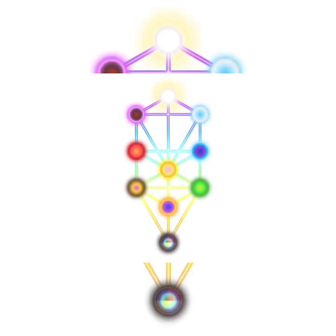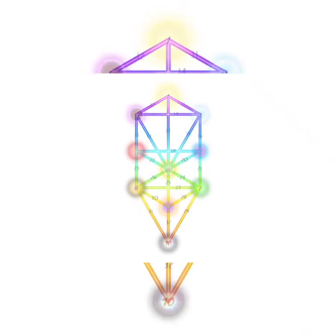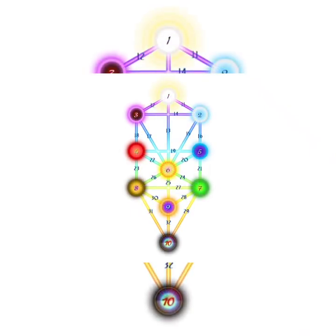The Tree of Life in its simplest sense is made up of 10 spheres and 22 interconnecting pathways. These are often added together and described as the 32 paths of the Tree of Life.